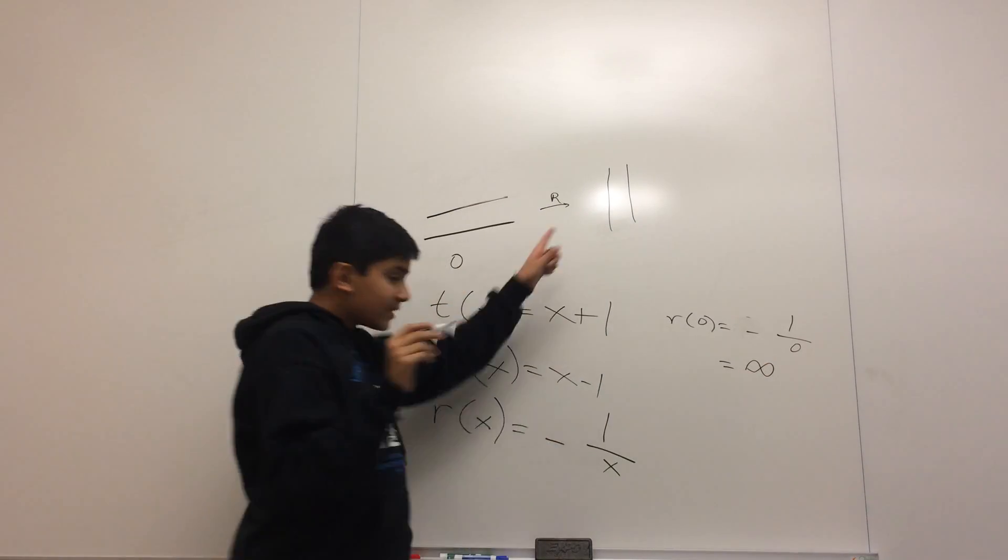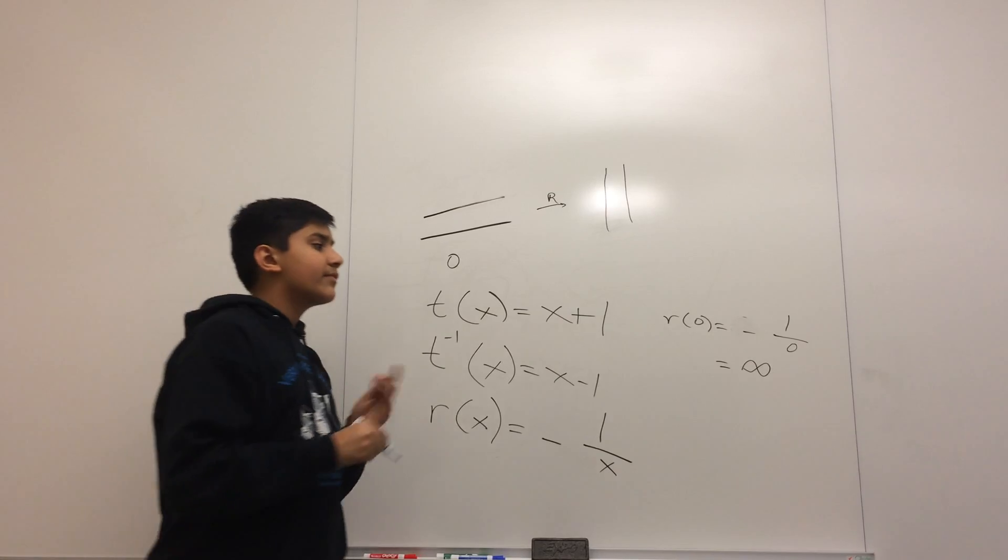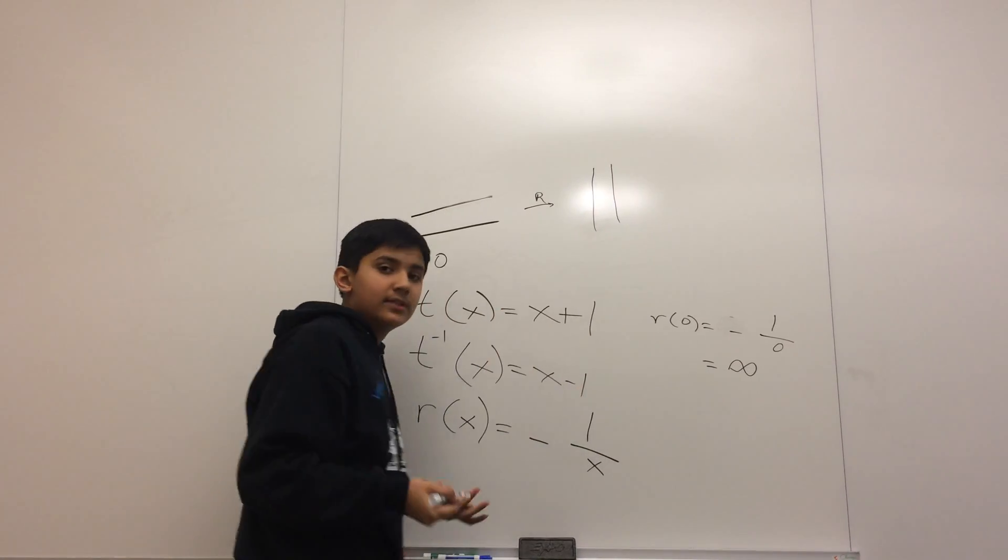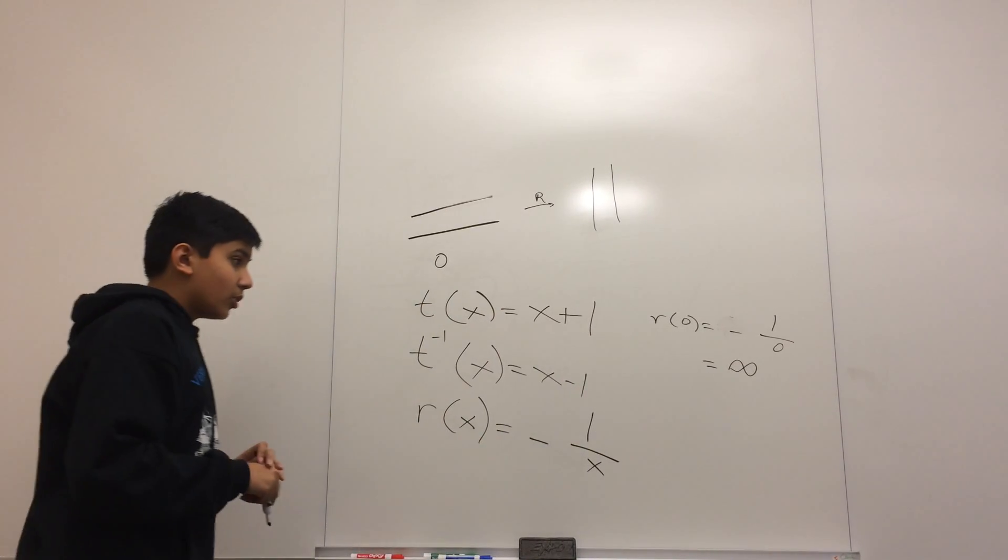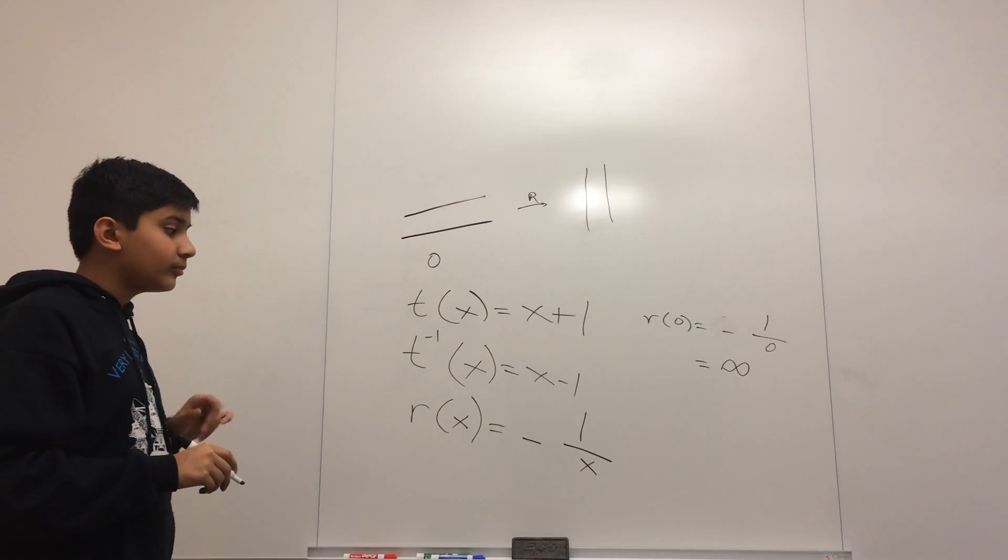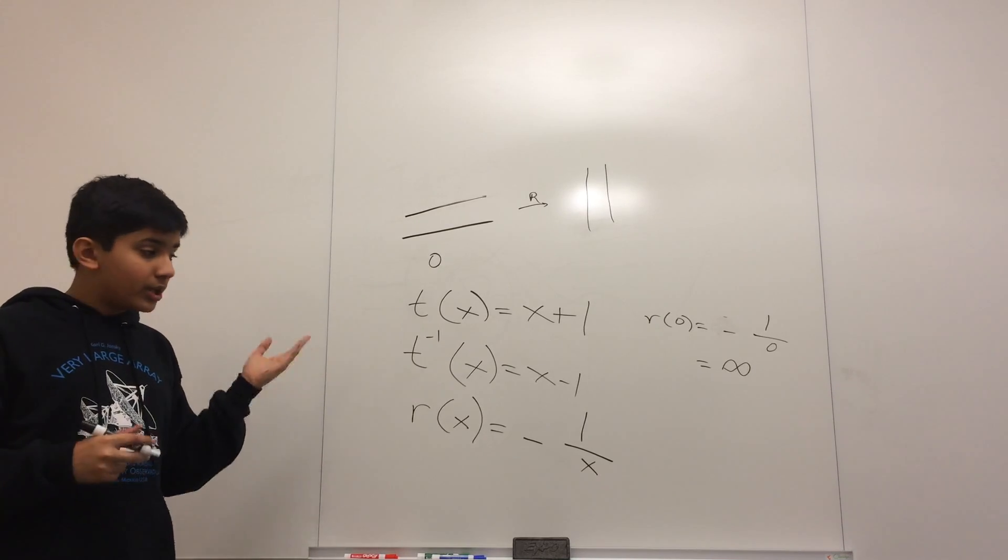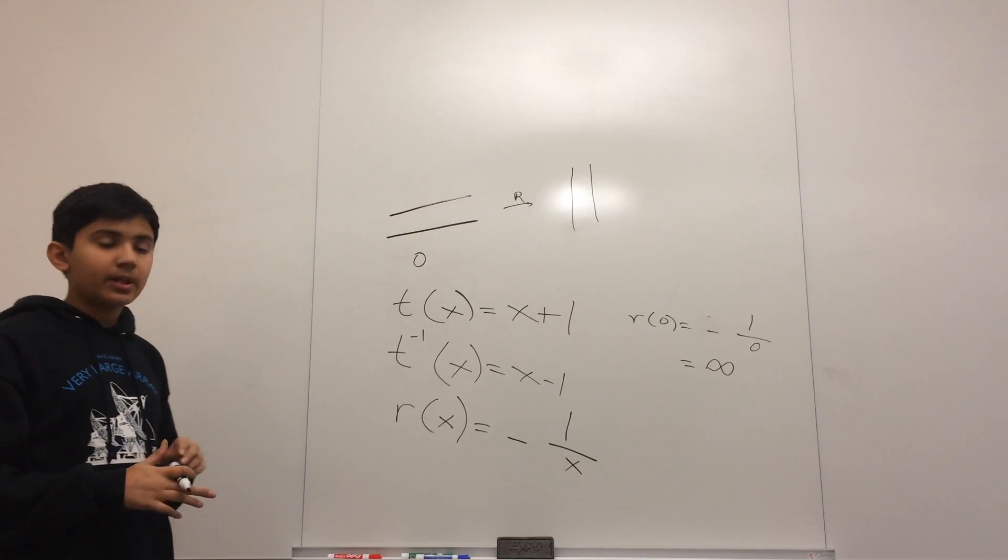So that means this tangle has a number of infinity, and the number infinity has the property 1 by infinity is 0. So rotating this again will get us back to this. Now using this system, we can calculate the number for any rational tangle.